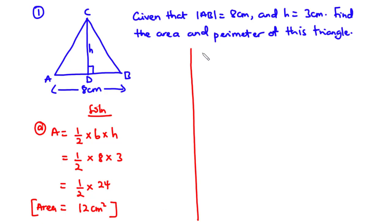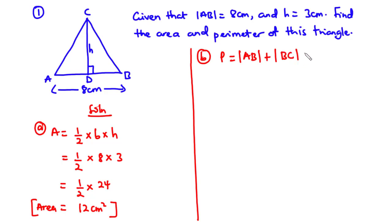Now let's solve for B — the perimeter of this triangle. The perimeter is equal to the sum of the length of all three sides: AB plus BC plus AC. We know that the side AB is 8 centimeters, but we do not know the length of BC and AC respectively, so we are going to find those values.